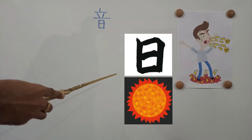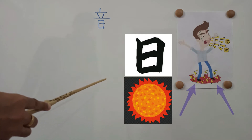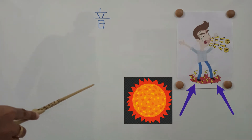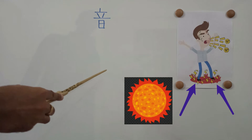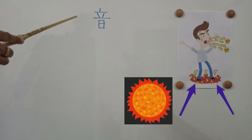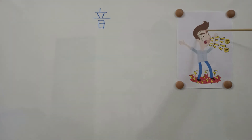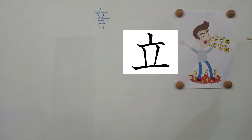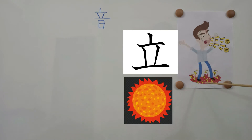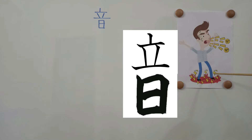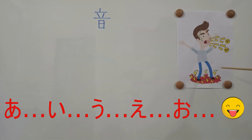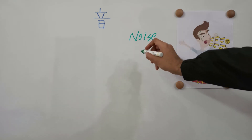Now coming to this bottom kanji — sun can be thought of as a source of heat. We will be keeping that in mind to understand the meaning of this kanji. You can imagine this man is standing, which can be symbolized by the 'stand' kanji, over a hot surface, which can be symbolized by the 'sun' kanji. And you would let out a shout: 'Help me!' This kanji means noise or sound.